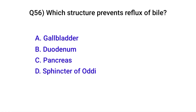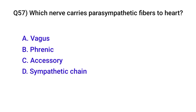Question number fifty-six: Which structure prevents reflux of bile? Correct option is D: Sphincter of Oddi. Question number fifty-seven: Which nerve carries parasympathetic fibres to the heart? Correct option is A: Vagus nerve.